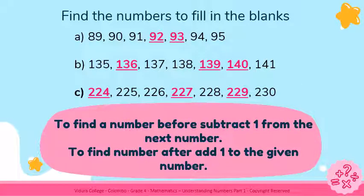These are the answers, children. For A: 92, 93 — there you have to find the number next, so it is easy. For B: 136, 139. Last one: 140. For C: 224 — for that you have to use the method to find the number before — then 227, 229.